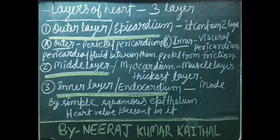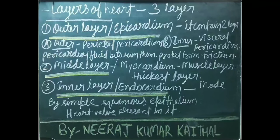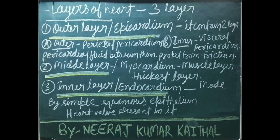The heart contains three layers: epicardium, myocardium, and endocardium. The epicardium is the outer layer and contains two sub-layers: the outer parietal pericardium and the inner visceral pericardium, with pericardial fluid found between them for lubrication and protection from friction. The myocardium is the middle muscle layer and is the thickest layer of the heart. The endocardium is the inner layer, made of simple squamous epithelium, and heart valves are present in it.